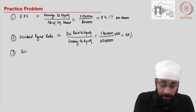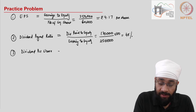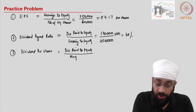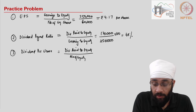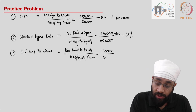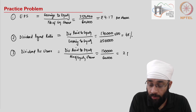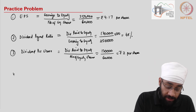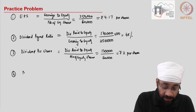Next, dividend per share equals dividend paid to equity divided by number of equity shares. Dividend paid is 1,20,000 divided by 60,000 shares, which gives rupees 2 per share as the dividend per share.